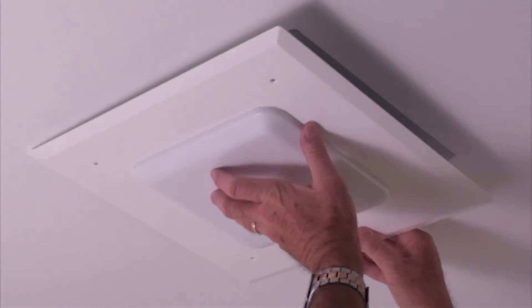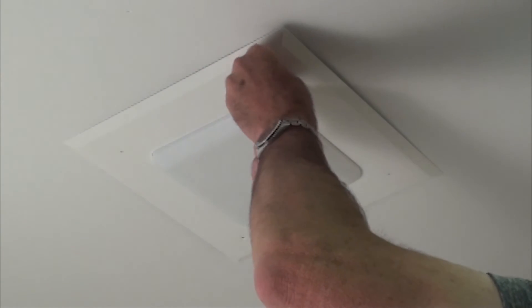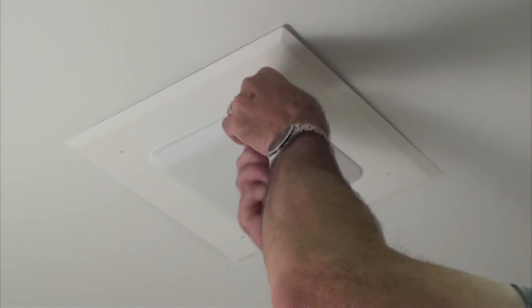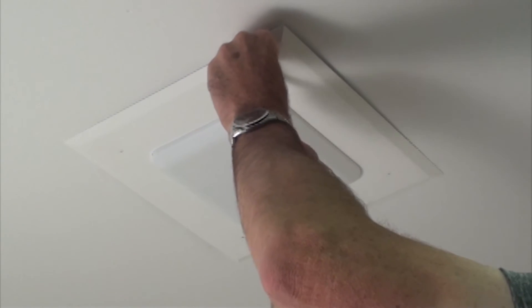Once the access point is secured and the ethernet is connected, screw the access point trim assembly into the installed back box using the provided painted screws.